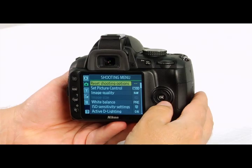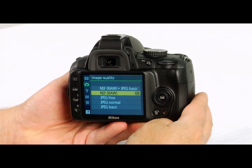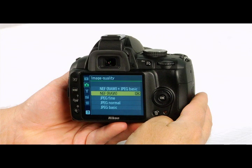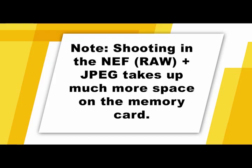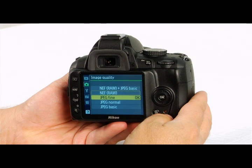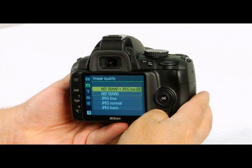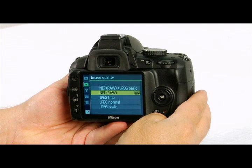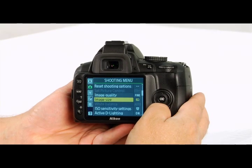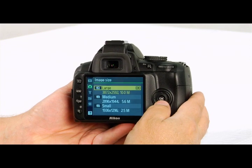To adjust image quality and size, from the shooting menu highlight image quality and select it using the OK button. You can choose from NEF or raw image quality where all of the data from the image sensor is saved to the memory card — note this takes up a lot more space on the card and these files require software to view or edit. Or you can choose from compressed JPEG settings of fine, normal, and basic, or save images in both raw and JPEG at the same time. Highlight the option you want and press OK to select it. Below image quality is image size, where you can select between large, medium, and small images for printing.